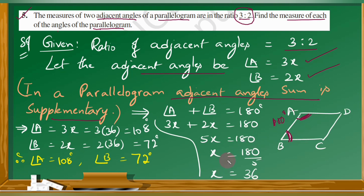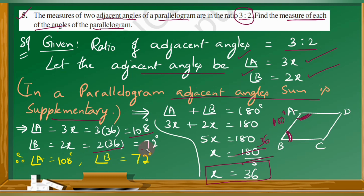Now finding each angle: angle A equals 3X, so 3 into 36 equals 108 degrees. Angle B equals 2X, so 2 into 36 equals 72 degrees. Therefore angle A equals 108 degrees and angle B equals 72 degrees. Understood?